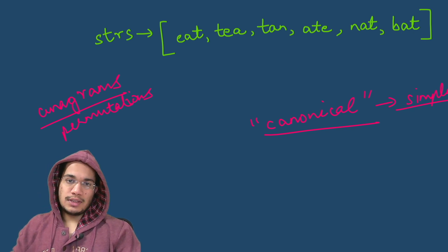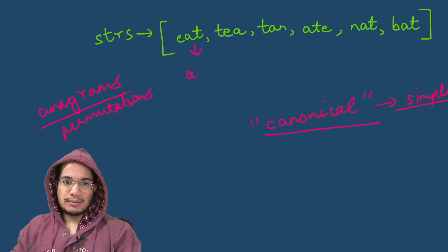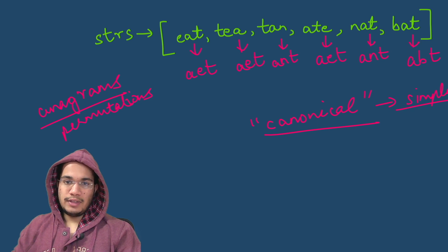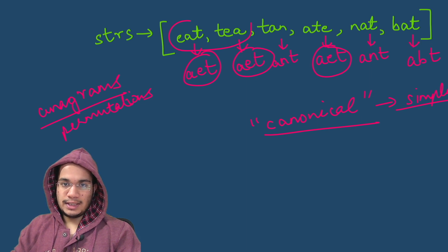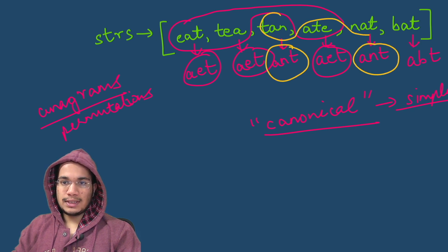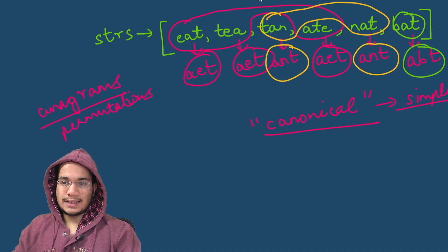If we convert each given word into its sorted form: eat becomes A, E, T; tea also becomes A, E, T; tan becomes A, N, T; ate becomes A, E, T; nat becomes A, N, T; and bat becomes A, B, T. Once we have all sorted forms, we can see that AET occurs three times — so eat, tea, and ate are anagrams in the same group. ANT occurs twice — so tan and nat are in the same group. And ABT is bat, which is its own group.